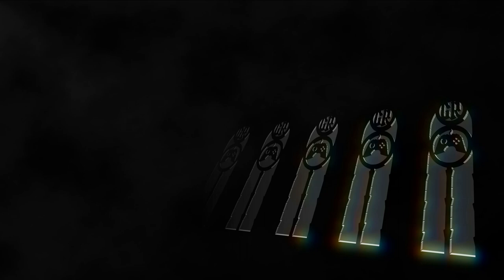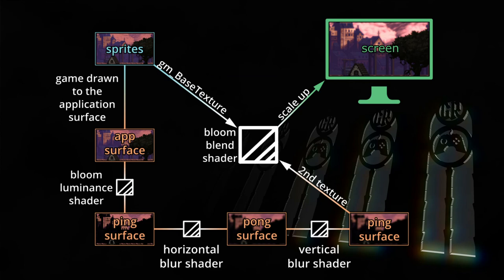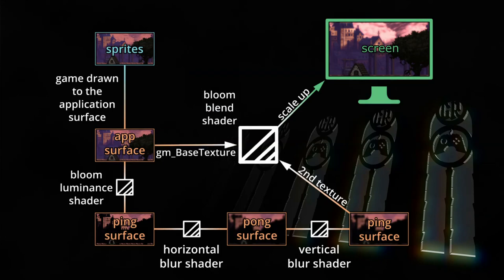With multiple render targets explained, let's show how we will use this feature to create the bloom-by-layer effect. This was the drawing schematic from the first Bloom tutorial — however it has a small but important mistake. The gm_BaseTexture for our bloom blend shader is not the sprites we draw to the application surface; it is the application surface itself. So it should look like this: we drew the game to the application surface, then drew only the bright colors to the pink surface, did a two-pass blur to pong and back to ping, and then blended the blurred bright colors with the application surface by adding their colors to get the bloom effect.